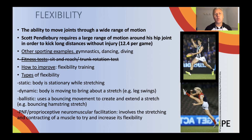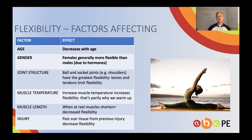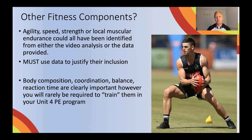Flexibility will be the fourth fitness component that I identified. When he kicks 12.4 times per game, he requires a large range of motion around his hip joint — not quite as much as Taylor Harris, albeit. We would use flexibility training to improve that, and there are a number of different types of training which we'll go through when we get to the training methods section. There are plenty of factors affecting flexibility — age and gender are not obvious ones, so make sure you've got more.